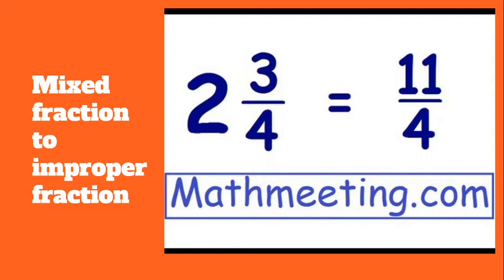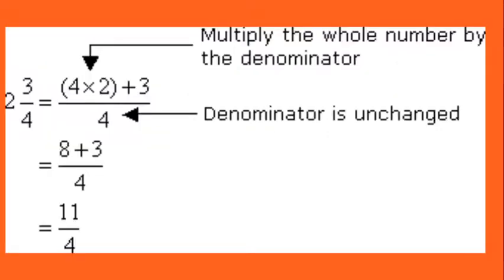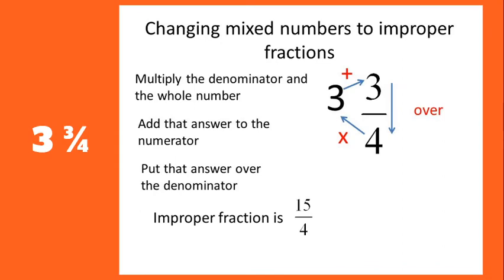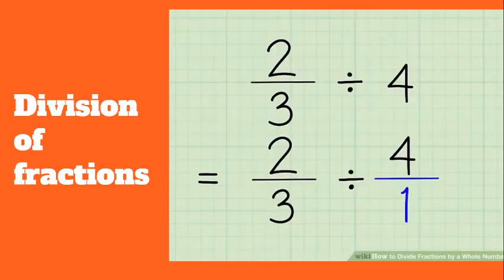If we have a mixed number, we can change it to an improper fraction. For example, two and three fourths is the same as eleven fourths. You take the whole number times the denominator and then add the numerator: two times four plus three equals eleven, and you keep the same denominator — the denominator is unchanged. Here's another example: three and three fourths. Three times four is twelve, plus three is fifteen, so fifteen fourths is the same as three and three fourths.